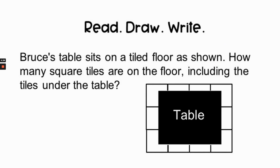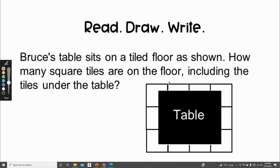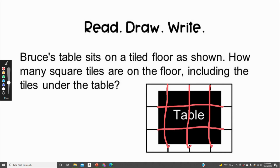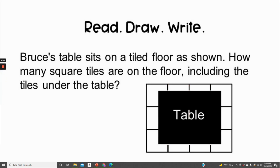Here's your redraw-write question. You're going to read the question with me, then find the answer on your own. Bruce's table sits on a tiled floor as shown. How many square tiles are on the floor, including the tiles under the table? Hint: look at the lines and in your mind or on paper extend them all the way down and all the way across. Pause the video now, do your very best work, and I'll see you in the next lesson.